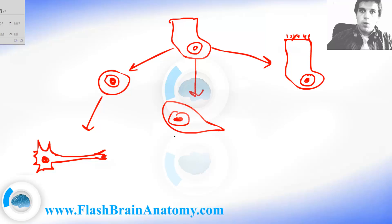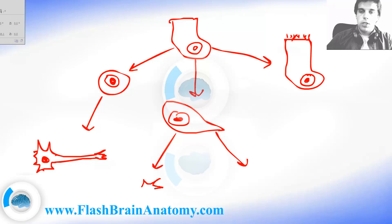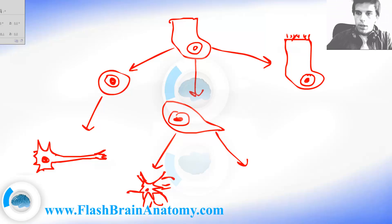The glia cells can develop further into astrocytes and oligodendrocytes. The astrocytes look somewhat like a star, and they give support to many other cells in the central nervous system.